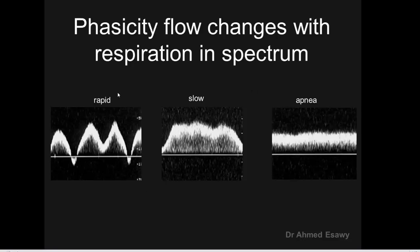In the spectrum, rapid venous flow corresponds to the cardiac cycle and phasicity appears. During expiration there is decreased venous flow; during inspiration flow may decrease or even reverse. Slow venous flow is affected by respiratory cycles with weak or slow cardiac modulation. In apnea, there is continuous flow without change in velocity — this is called patient apneic, with no respiratory variation.